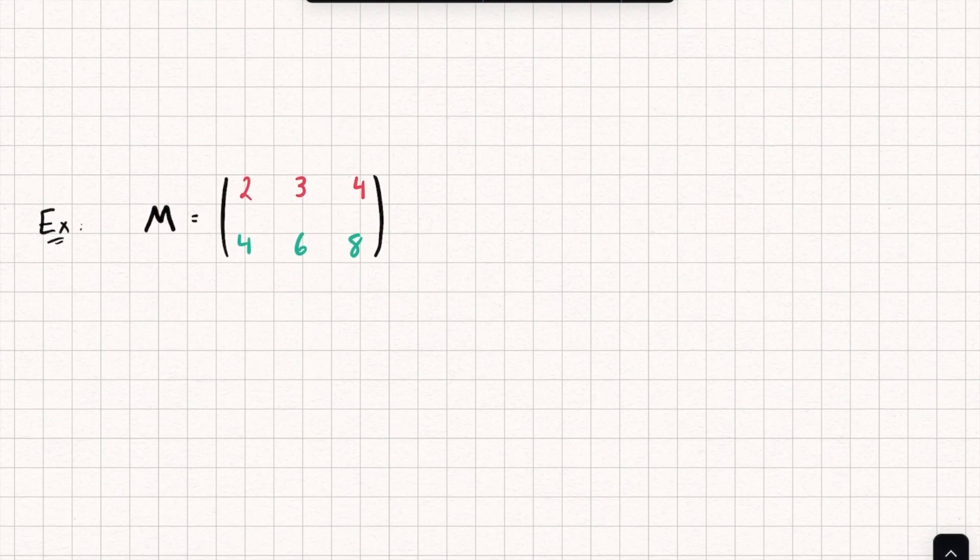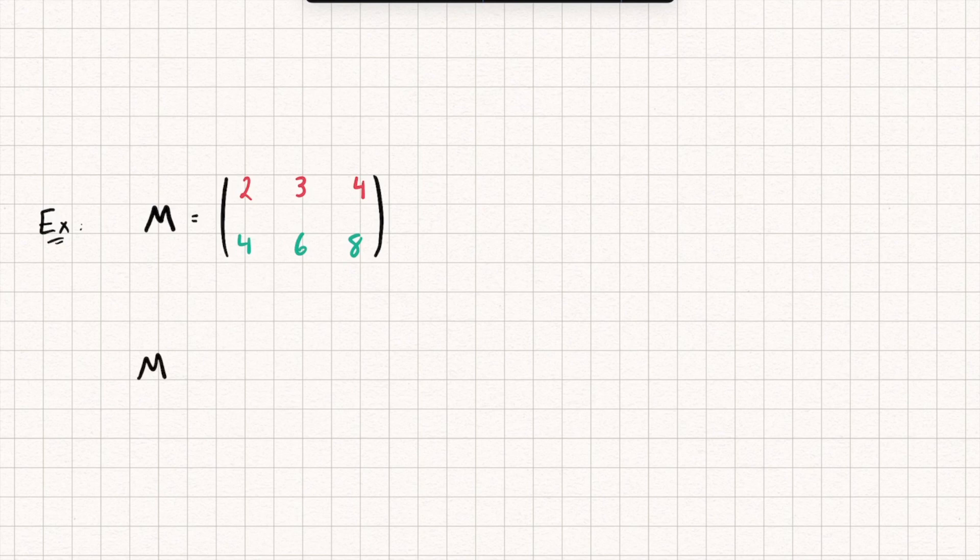We can also perform a calculation on a matrix. One of these calculations is called finding the transpose of a matrix. All a transpose of a matrix is, it's just flipping the rows for the columns. So here we have a matrix M. Let's find the transpose of M, M transpose. And we use this T to represent that.